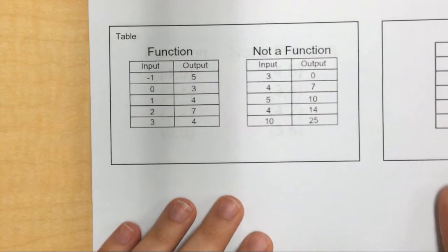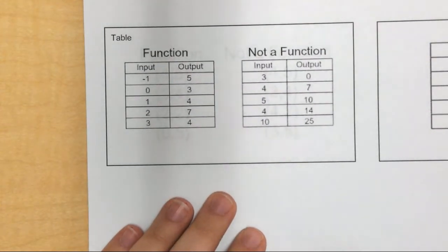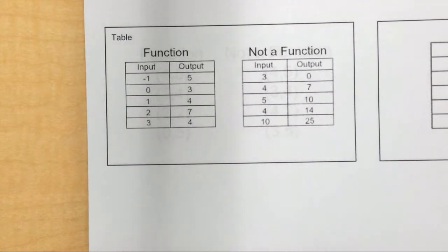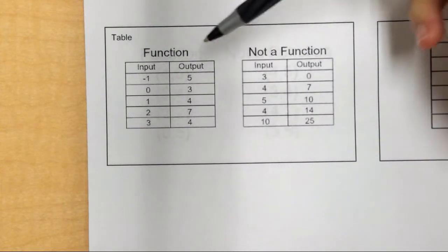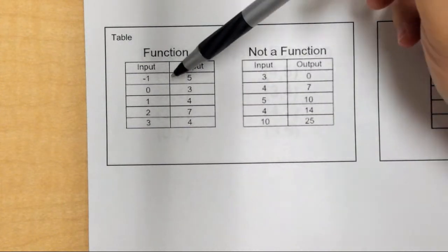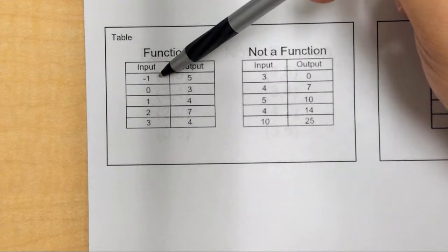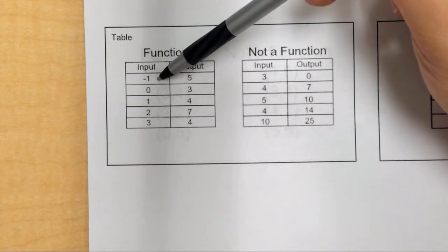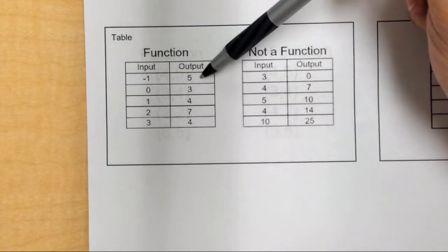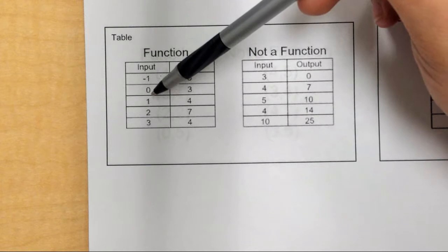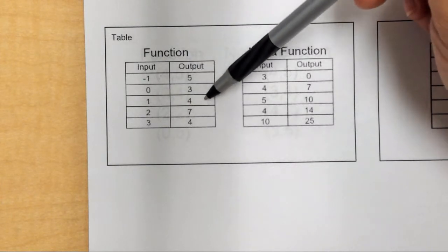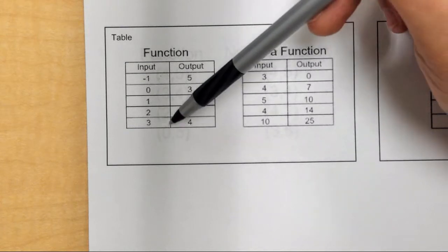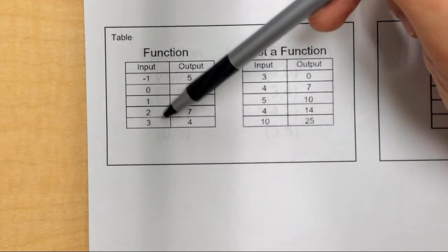Let's look at tables. Functions can also be represented as a table, where you have the inputs listed and the outputs listed. This table is a function because every input goes to exactly one output: negative one goes to five, zero goes to three, one goes to four, two goes to seven, and three goes to four. So that is a function.